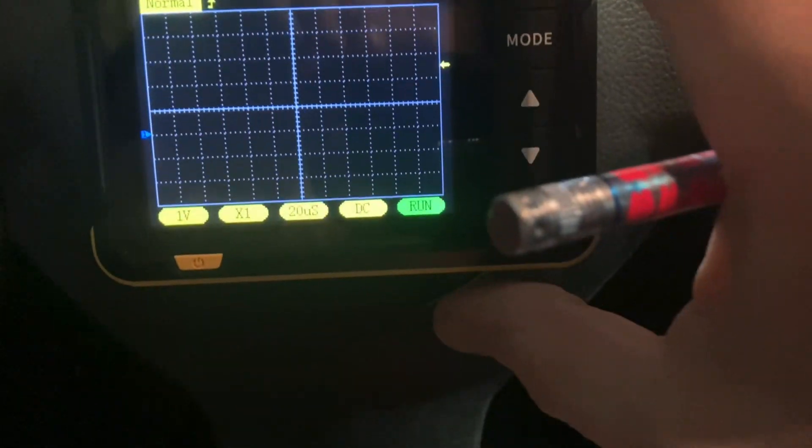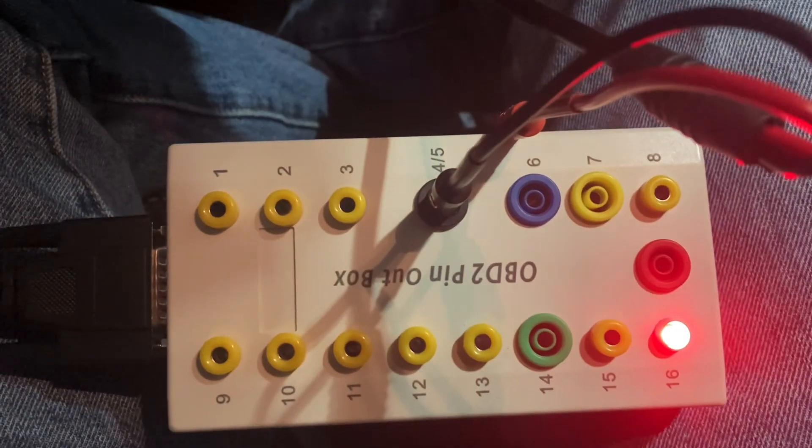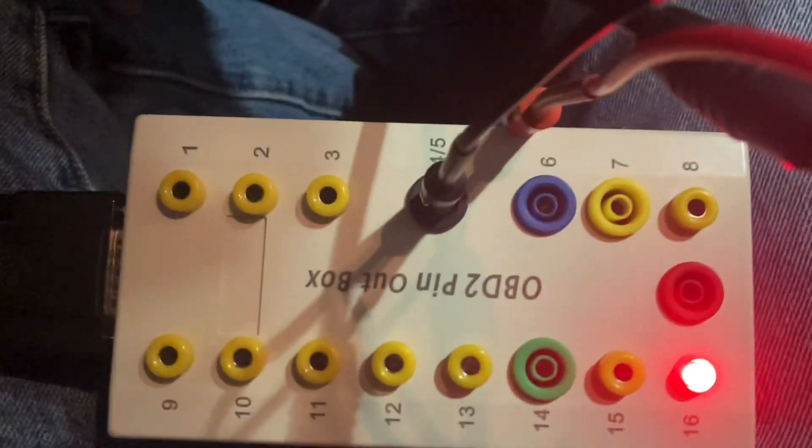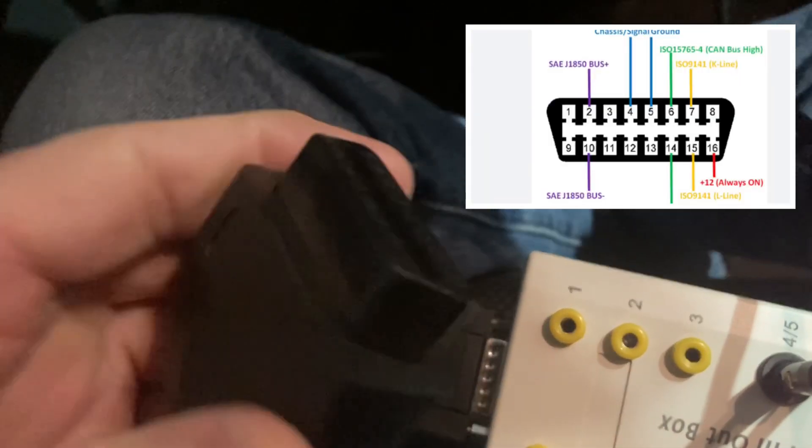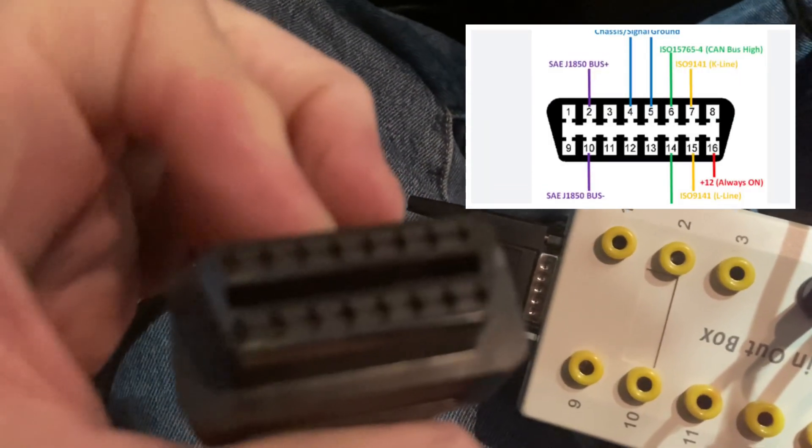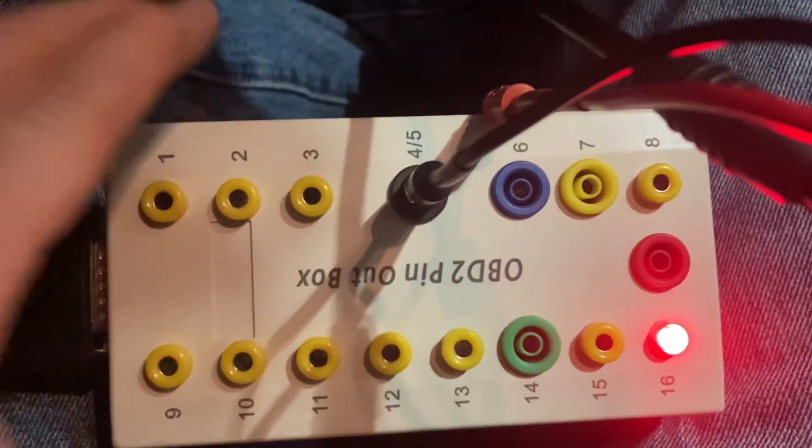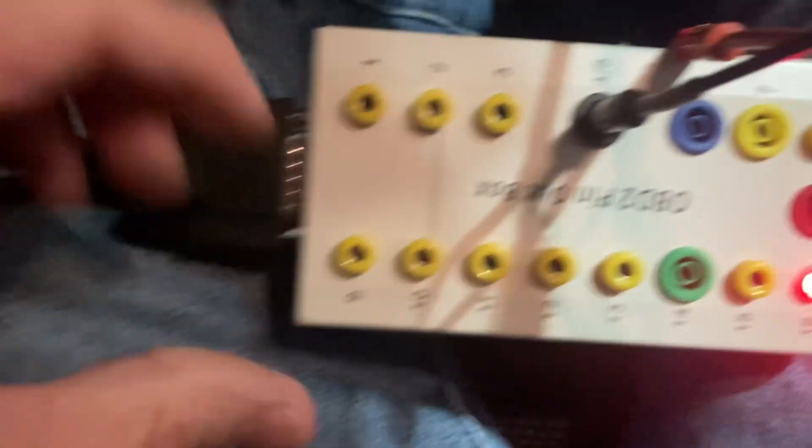I have my little breakout box here. The harness here goes down to the datalink connector which will look very similar to this under dash. Some of you are well familiar with this. What the breakout box does is just afford me easy pin out of the actual pins on the datalink connector.